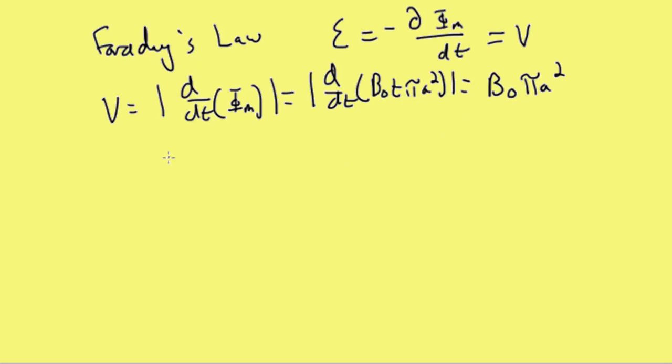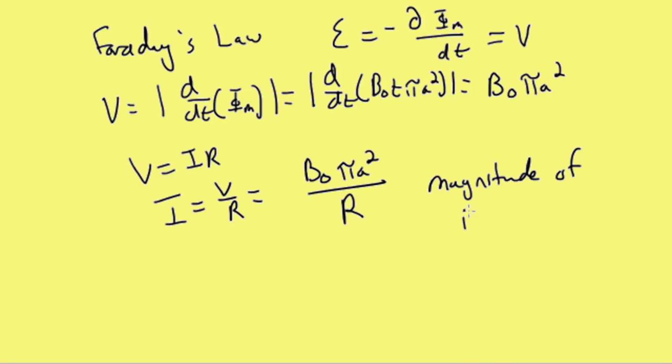Now if we use Ohm's law, we have V equals IR, and we solve for the current, so it's V over R. Then we can put in B zero π a squared, which we determined from up here, and then that's over the resistance R of the wire. And then this is the magnitude of induced current.